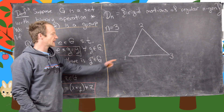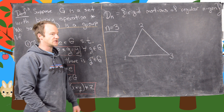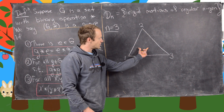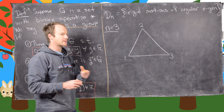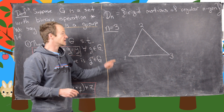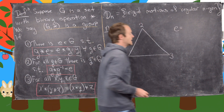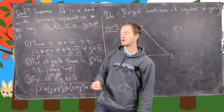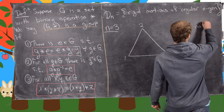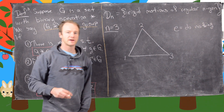Now notice what can we do to this triangle so that it remains unchanged? Suppose you could pull this triangle out of the chalkboard, do something to it, put it back, and you wouldn't notice a difference. You could obviously do nothing, and we'll call that e to be the identity, in line with our notation. So this would be 'do nothing.'